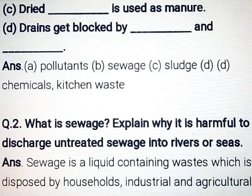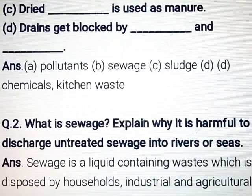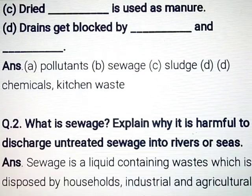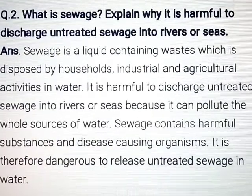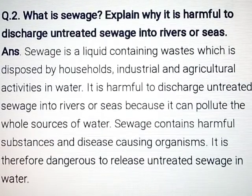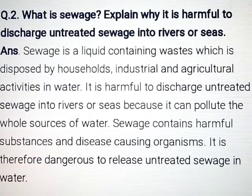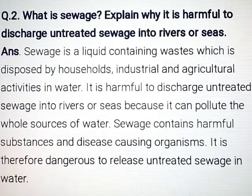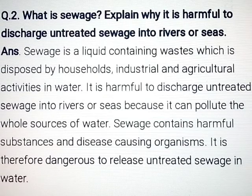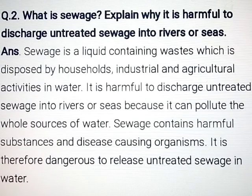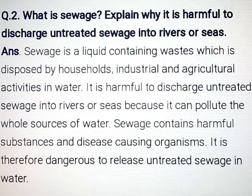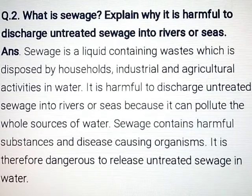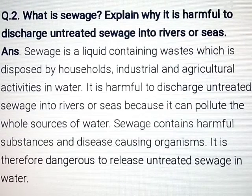Question number 2: What is sewage? Explain why it is harmful to discharge untreated sewage into rivers or seas. Answer: Sewage is a liquid containing wastes which is disposed by households, industrial and agricultural activities in water. It is harmful to discharge untreated sewage into rivers or seas because it can pollute the whole sources of water. Sewage contains harmful substances and disease-causing organisms, and it is therefore dangerous to release untreated sewage in water.